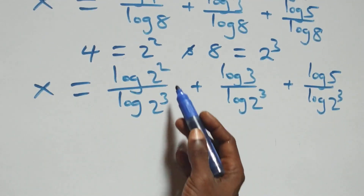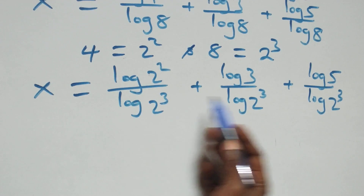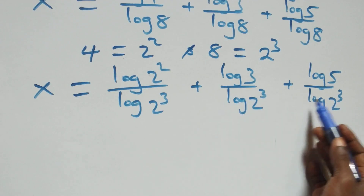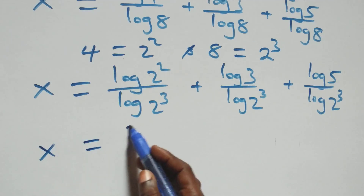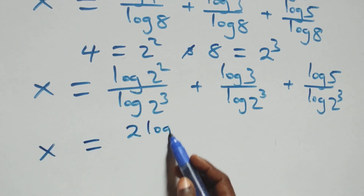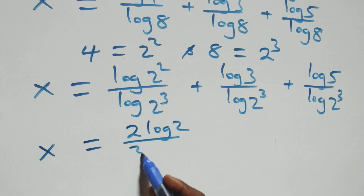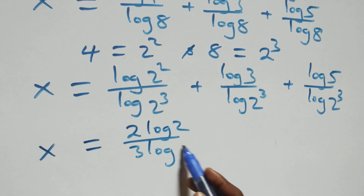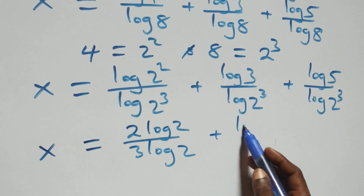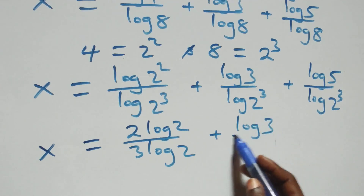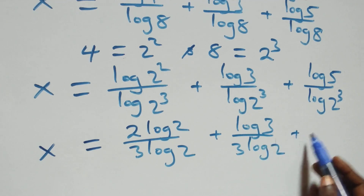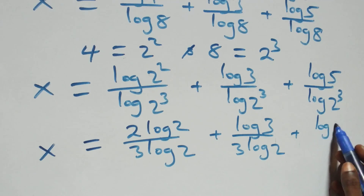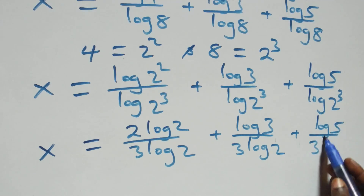We apply the power law of logarithm again: the 2 comes out from log(2 squared) and the 3 comes out from log(2 cubed). So we have x equals to 2 log 2 over 3 log 2 plus log 3 over 3 log 2 plus log 5 over 3 log 2.